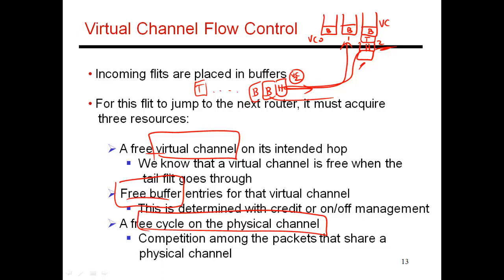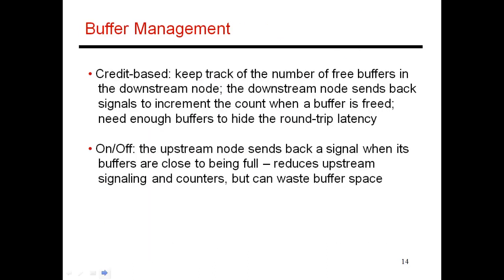The head flit has to worry about acquiring the virtual channel ID. The body flits have already been assigned a virtual channel ID, and they are essentially competing for a free buffer entry and a cycle on the physical channel. So this explains the process of a packet basically moving from one router to the next. So as I said, there are three different resources that have to be acquired. You have to acquire a virtual channel. I just explained how that virtual channel is assigned. You also have to acquire the physical channel, the physical link. And I just said that there's an arbiter that grants the physical link to one of the three packets every single cycle. The third thing is the free buffer entry.